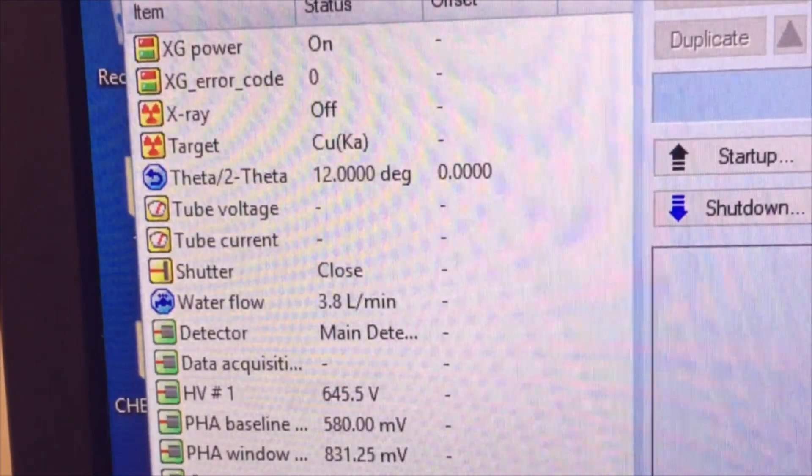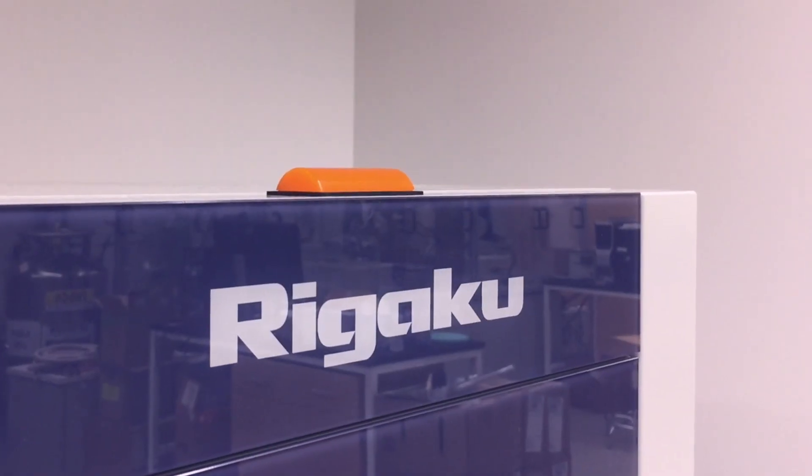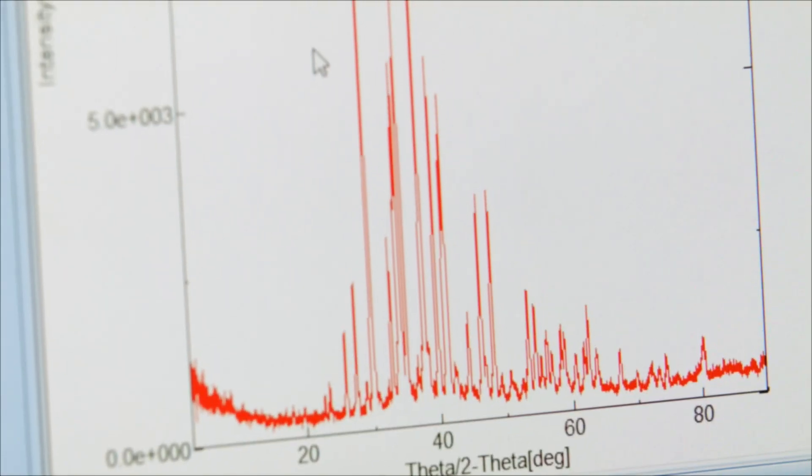You can watch the tube voltage and current go up in the status window. You should also notice that the x-ray light turns on when you click run. Once the data is completed, you'll see the completed scan on your window.